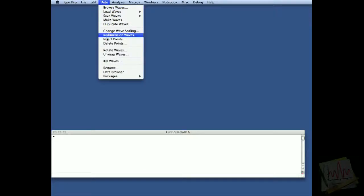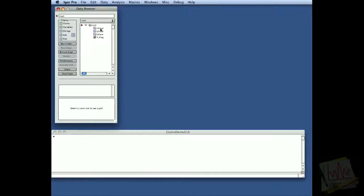So to start, we go to Data menu and we choose Data Browser so that we can see the data that we have. We have here three waves, x-wave, y-wave, and z-wave. Each one of them has 33 rows.